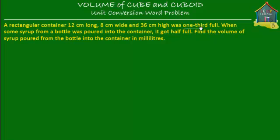One-third full, which means that it had some fluid liquid in it until one-third of its capacity. Now when some syrup from a bottle was poured into the container, it got half full. Find the volume of syrup poured from the bottle into the container in milliliters.